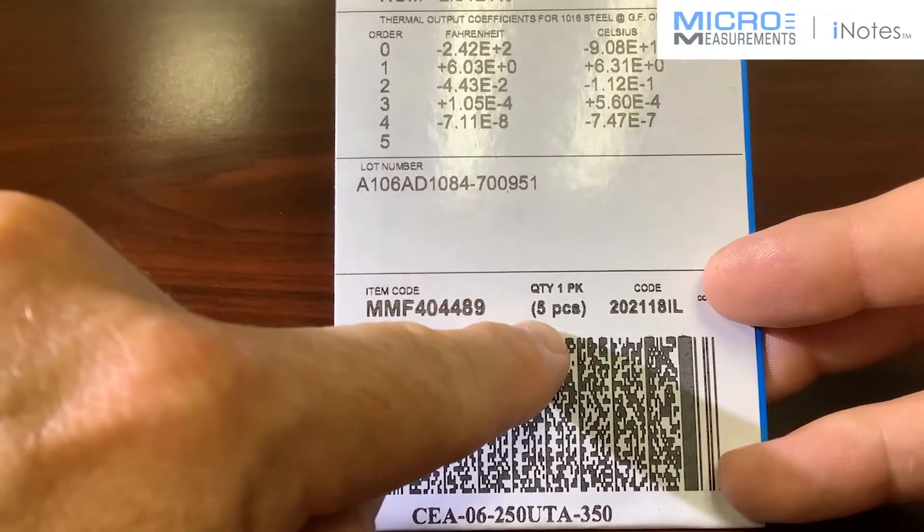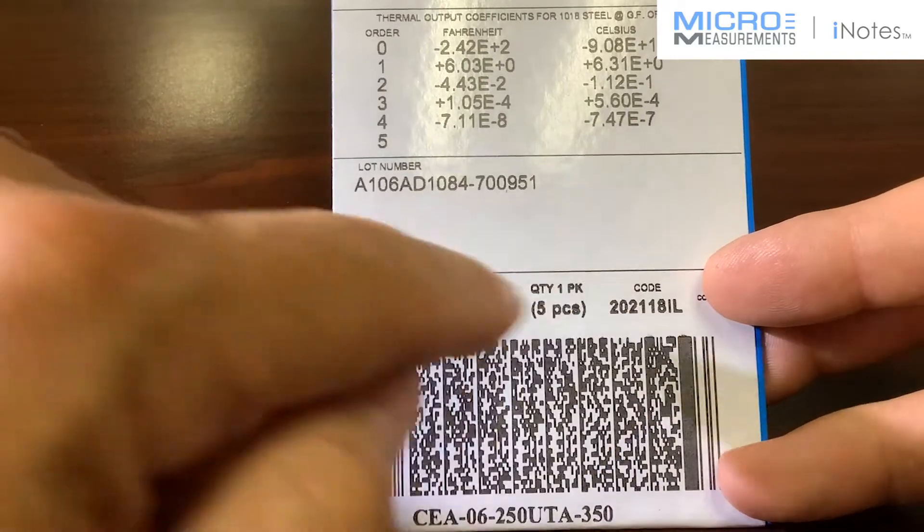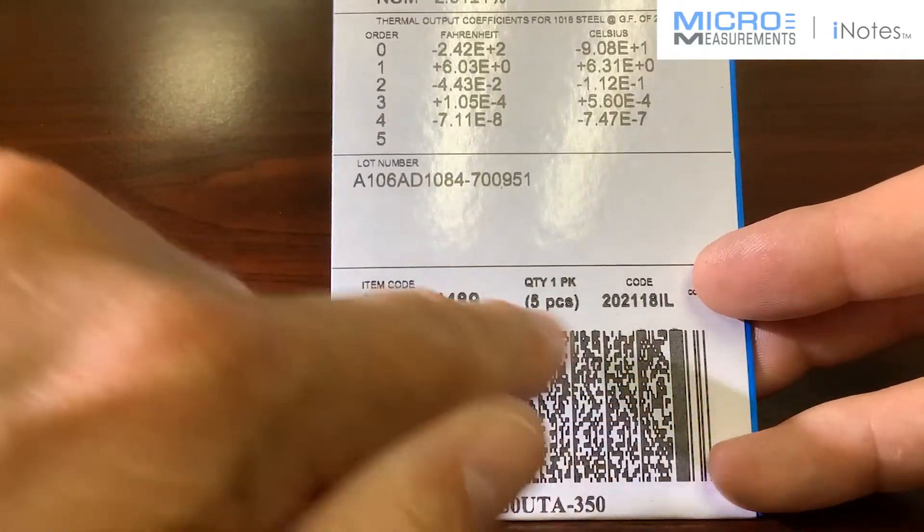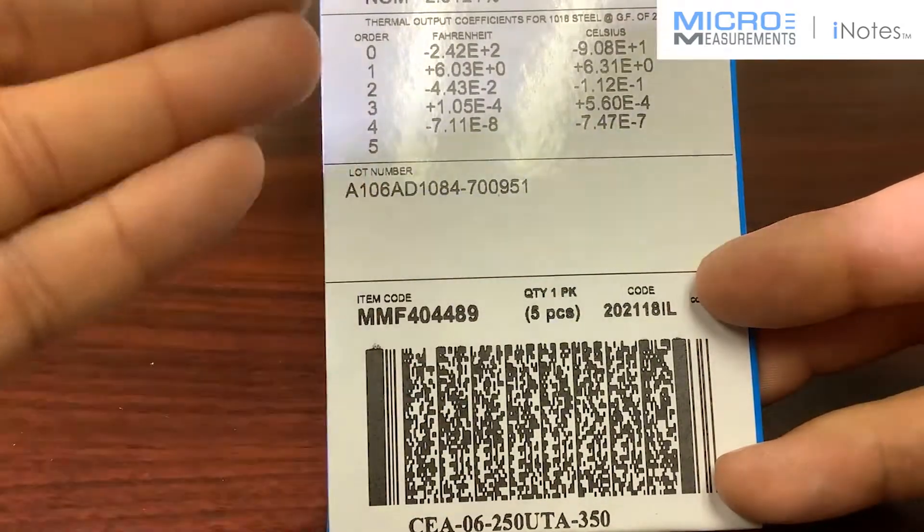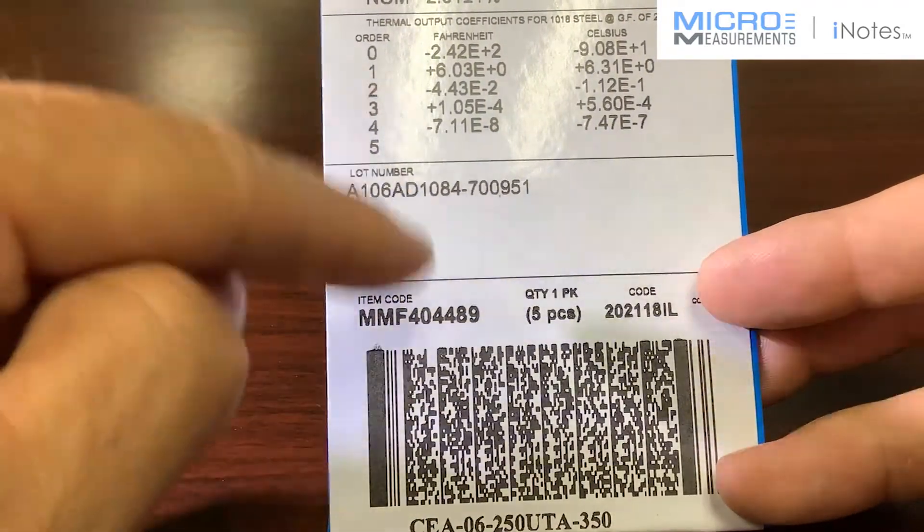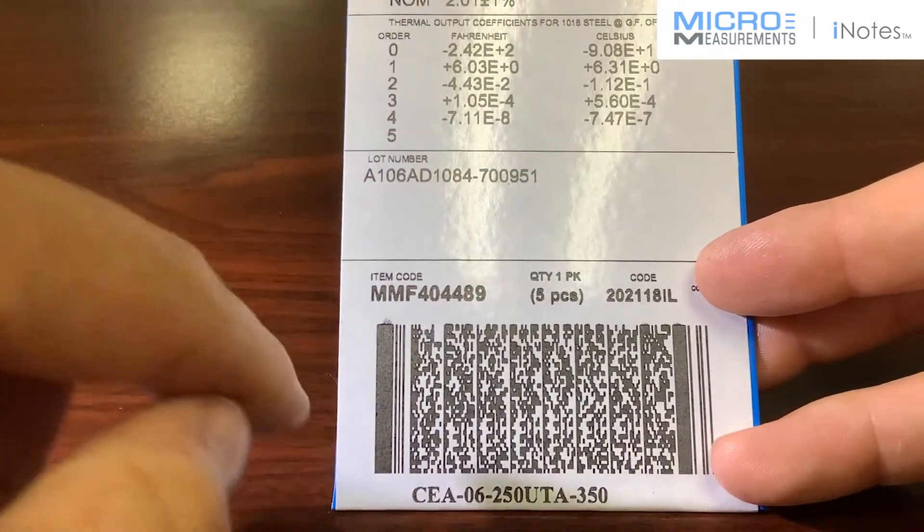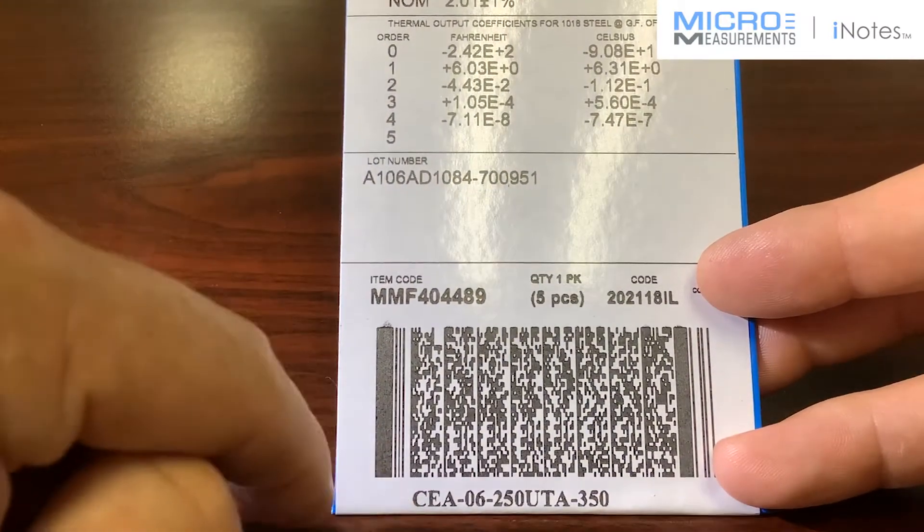Quantity in a package, we've got five gauges, and we've got another manufacturing code over here, and then you see the 2D barcode, and you can shoot that with a barcode scanner, and it'll import all the technical data that's available on this engineering data sticker, and then last but not least, you see the part number at the bottom.